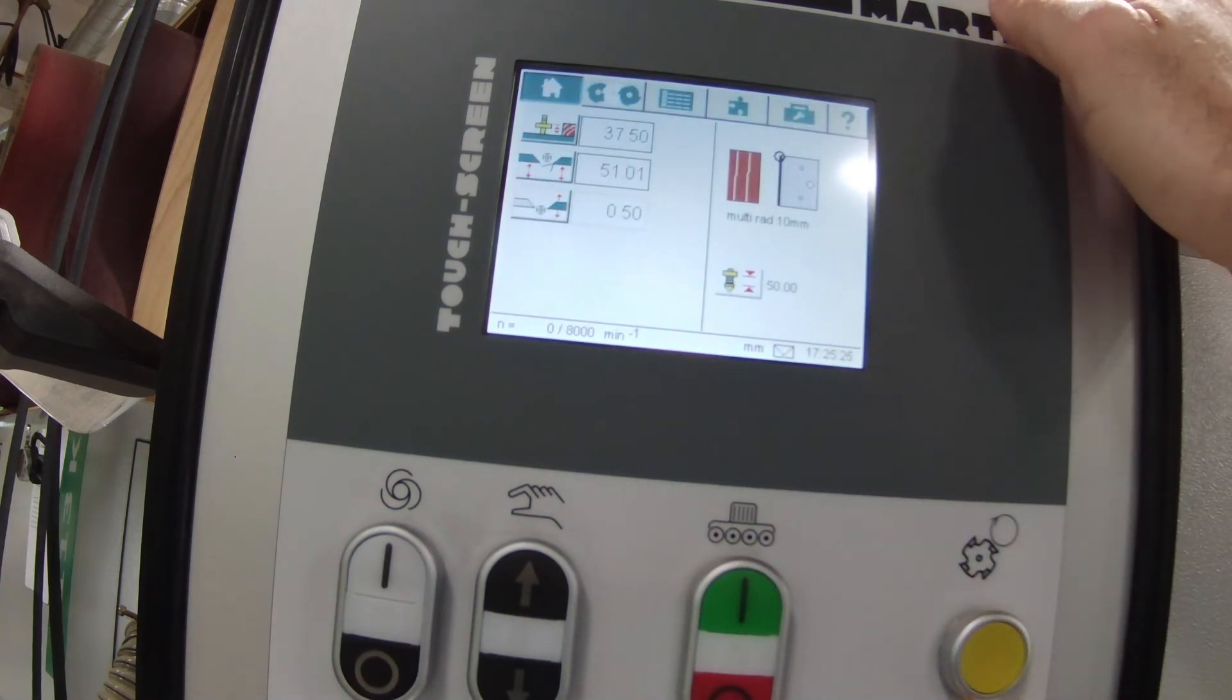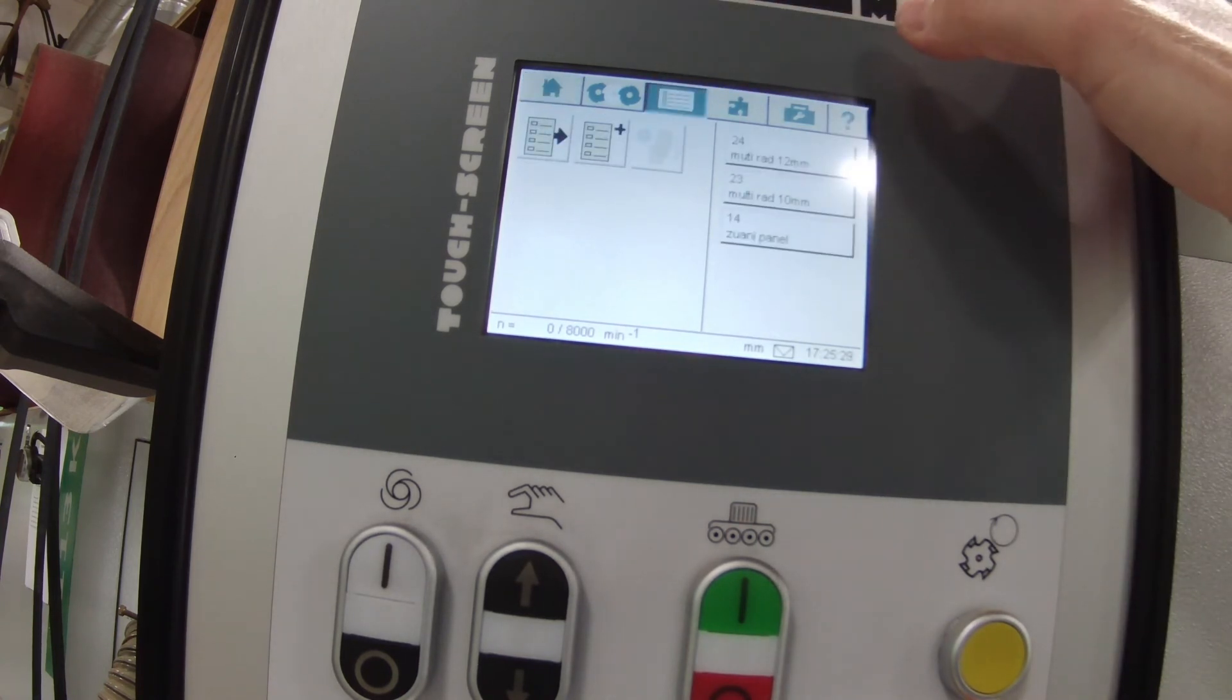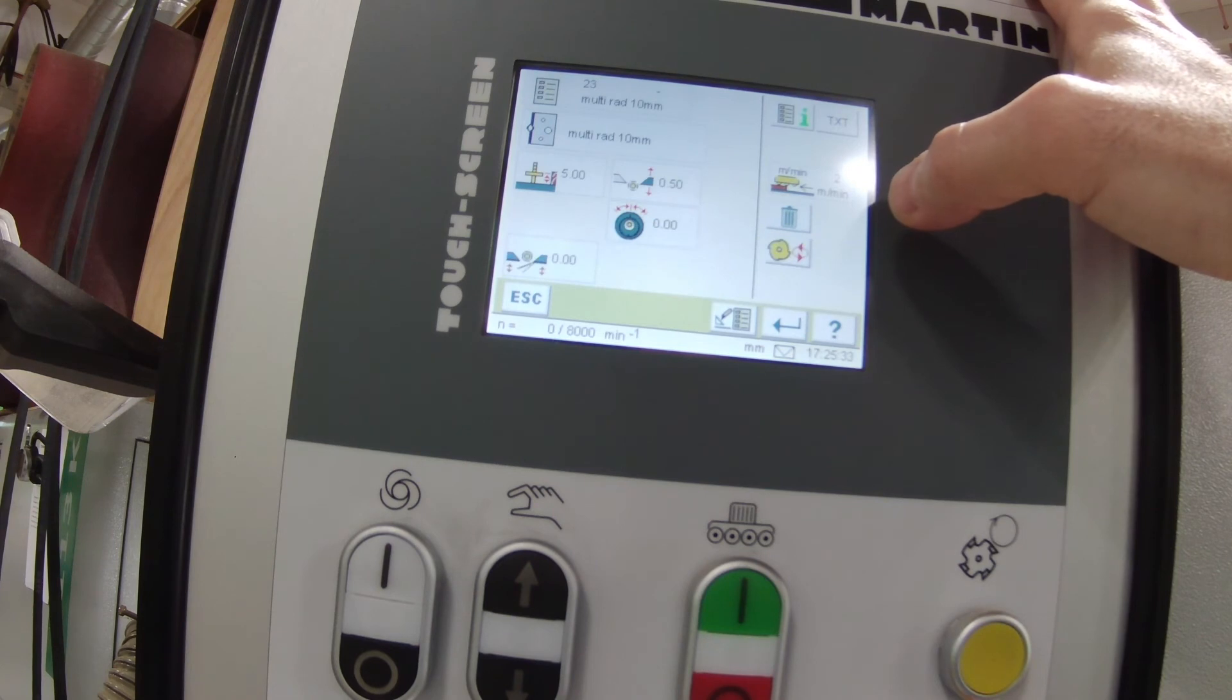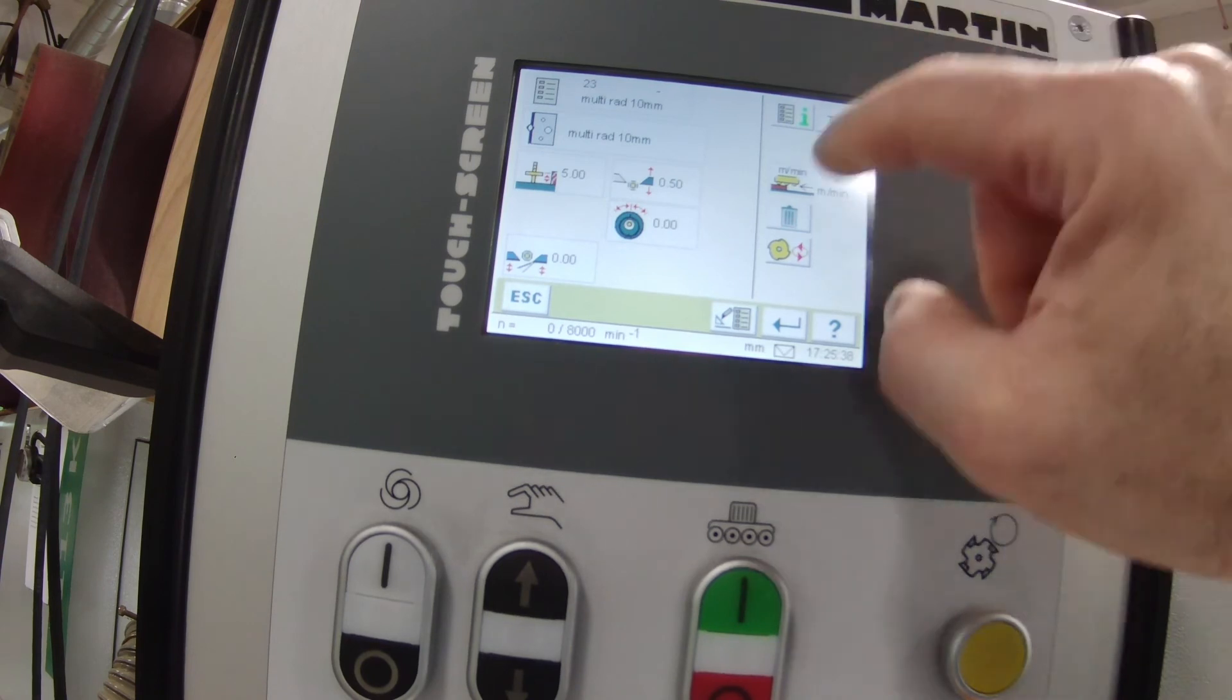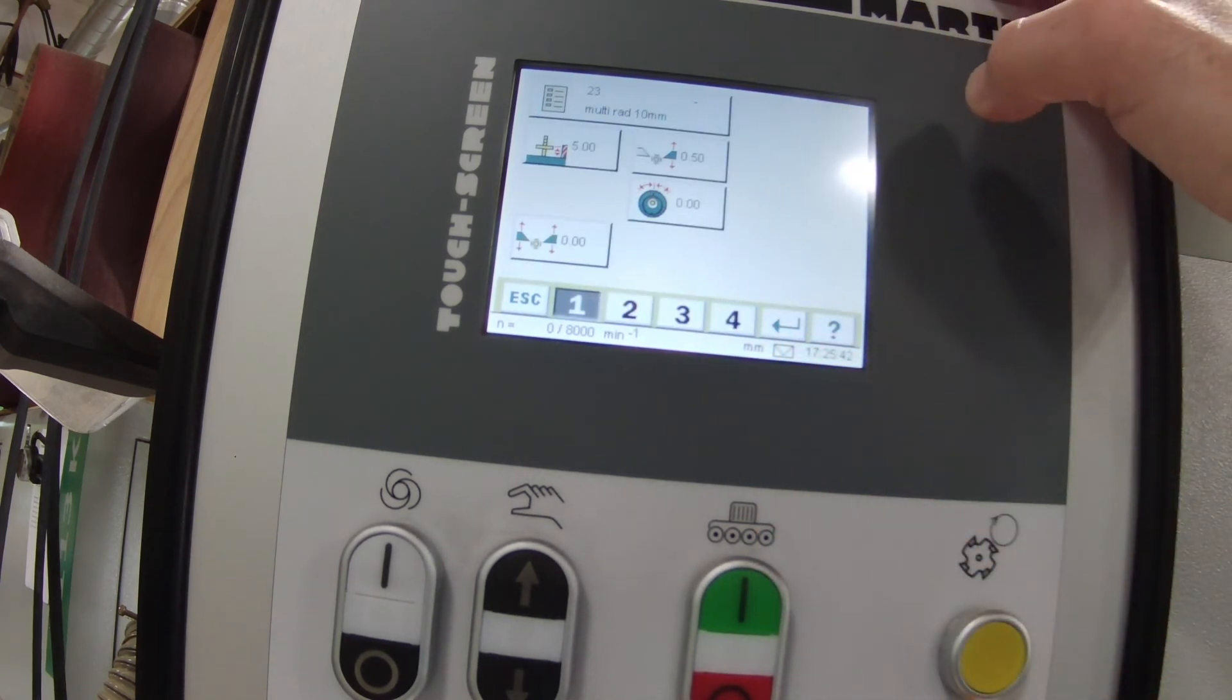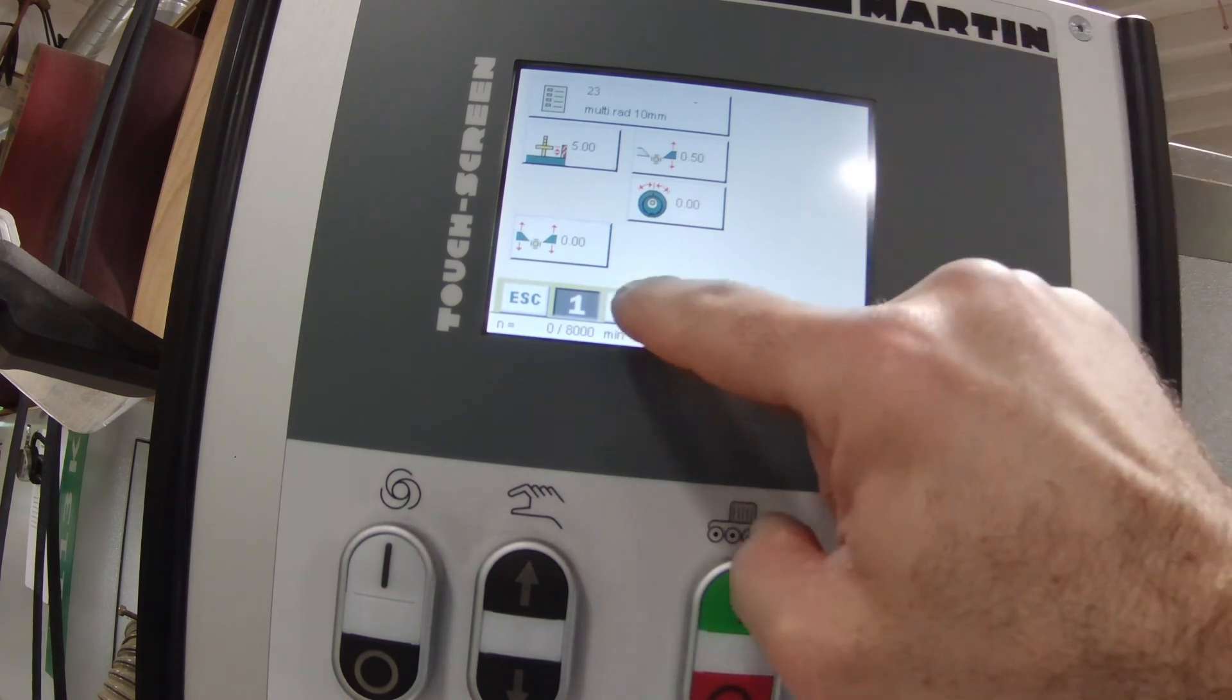Okay, now that the cutter is programmed in, let's make a program to cut 10 millimeter stock. So I'm going to make a new program by hitting the plus button under program. And I'm going to select that particular cutter. And I'm going to set the fence to zero, but I'm going to set the infeed fence to a half millimeter back.